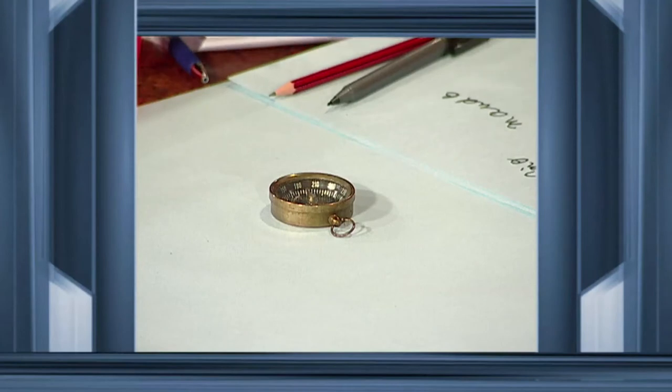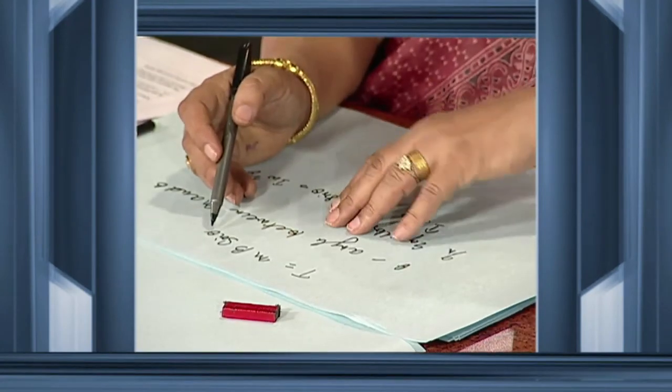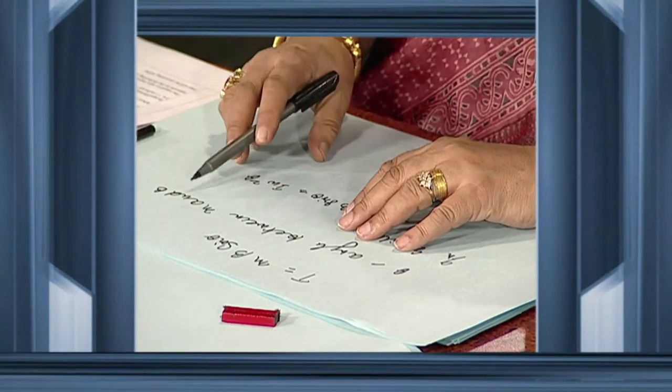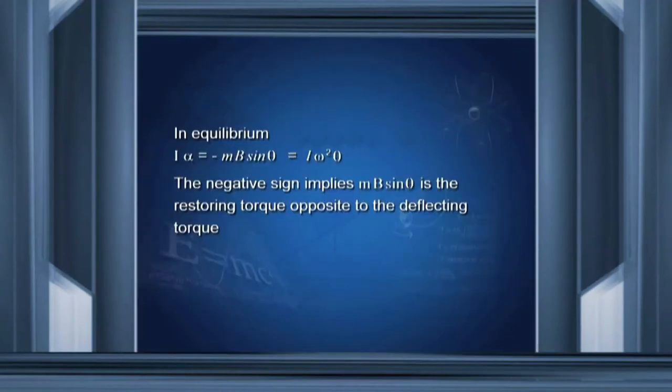Let us now calculate the torque acting on this needle, which has a moment of inertia I and a magnetic moment M, placed in a magnetic field of strength B provided by an external magnet. The value of torque will be MB sinθ, where θ is the angle between the magnetic moment M and the external field B. In equilibrium, this torque should be equal to I times the angular acceleration, which gives us I·α = −MB sinθ.